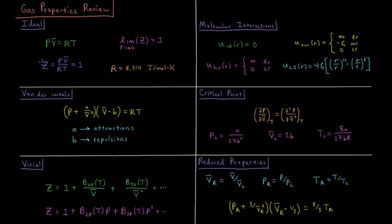We define the quantity Z, the compressibility factor, which is PV bar over RT, which equals 1 under the ideal gas.